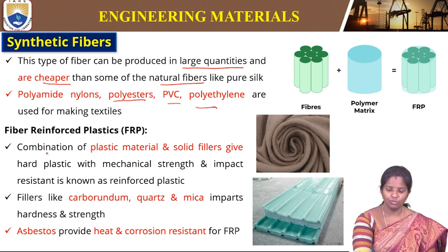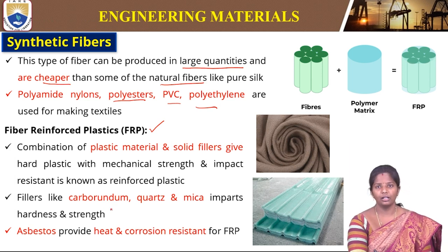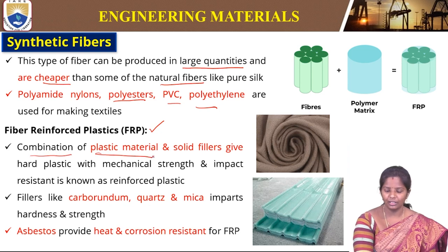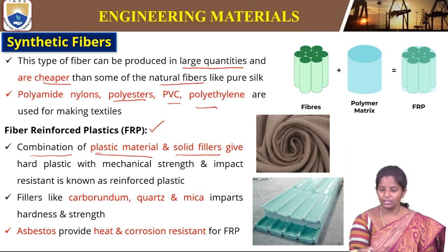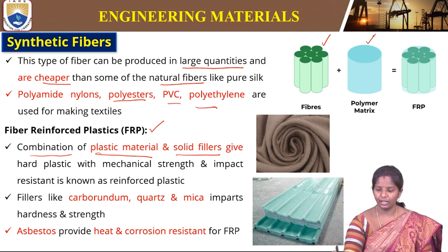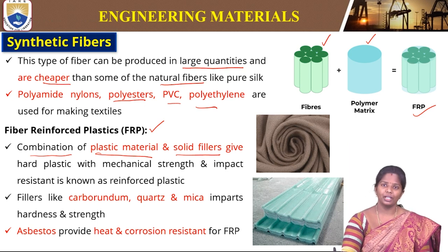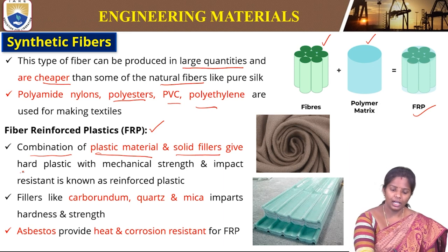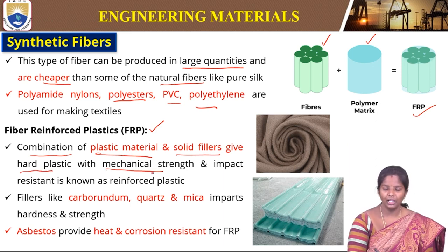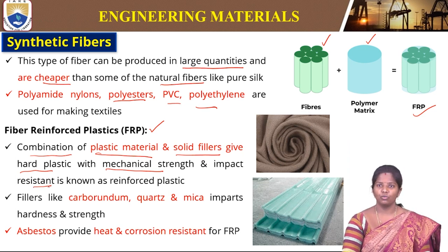Fiber reinforced plastics are composites used in different applications. They are a combination of plastic material and solid fillers — for example, polymer fibers and a polymer matrix when combined together form fiber reinforced plastics. These have different properties; the properties vary when this combination takes place, resulting in mechanical strength and impact resistance. These are known as reinforced plastics.